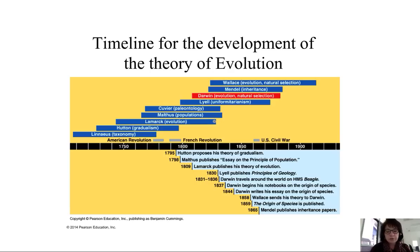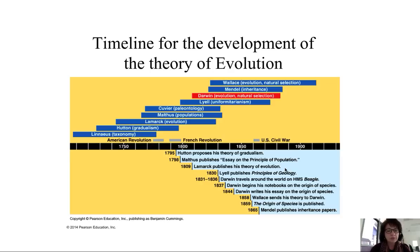Lamarck deserves discussion. He did publish the word 'evolution' and believed traits were passed to the next generation — which was correct. However, his mechanism was probably wrong. He believed in use and disuse: if a species didn't use a trait, it wouldn't be passed on; if it overused something, like a giraffe stretching its neck, subsequent generations would have longer necks. We now know that's not the mechanism, but you could reframe it to say the giraffe born with a longer neck due to its genes would get more food and pass those traits on. He just didn't quite have it right, but his work certainly informed later scientists.